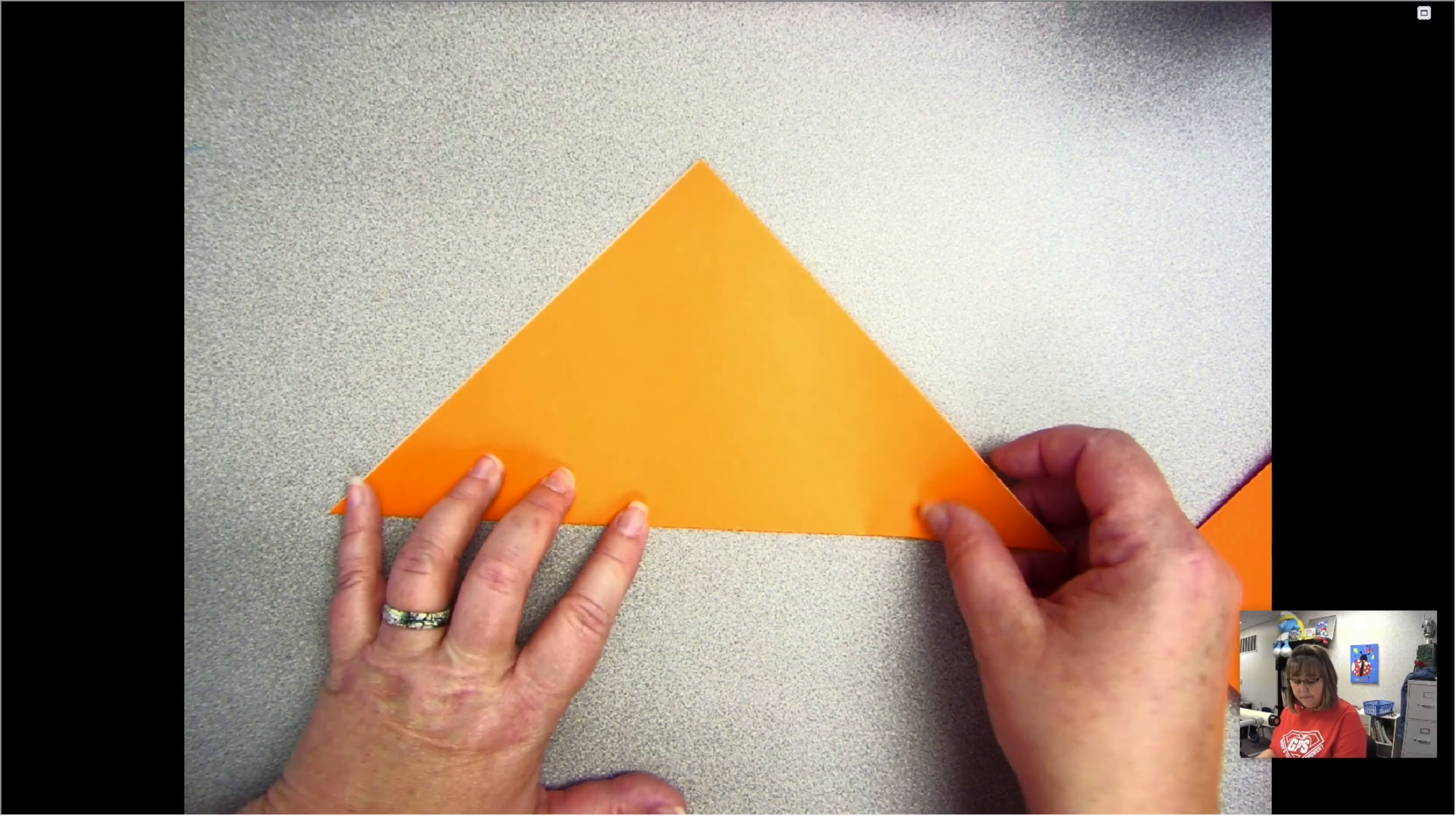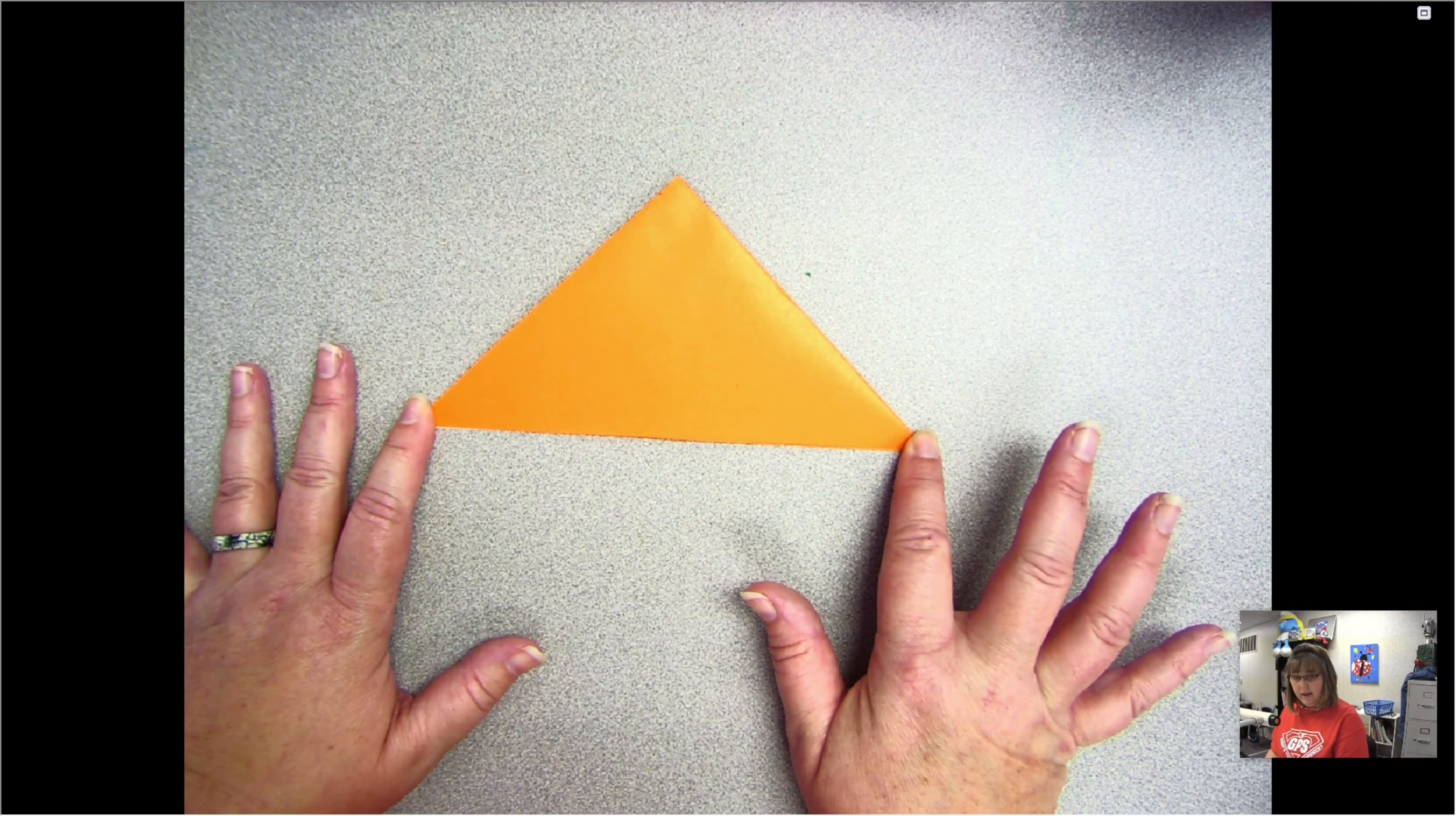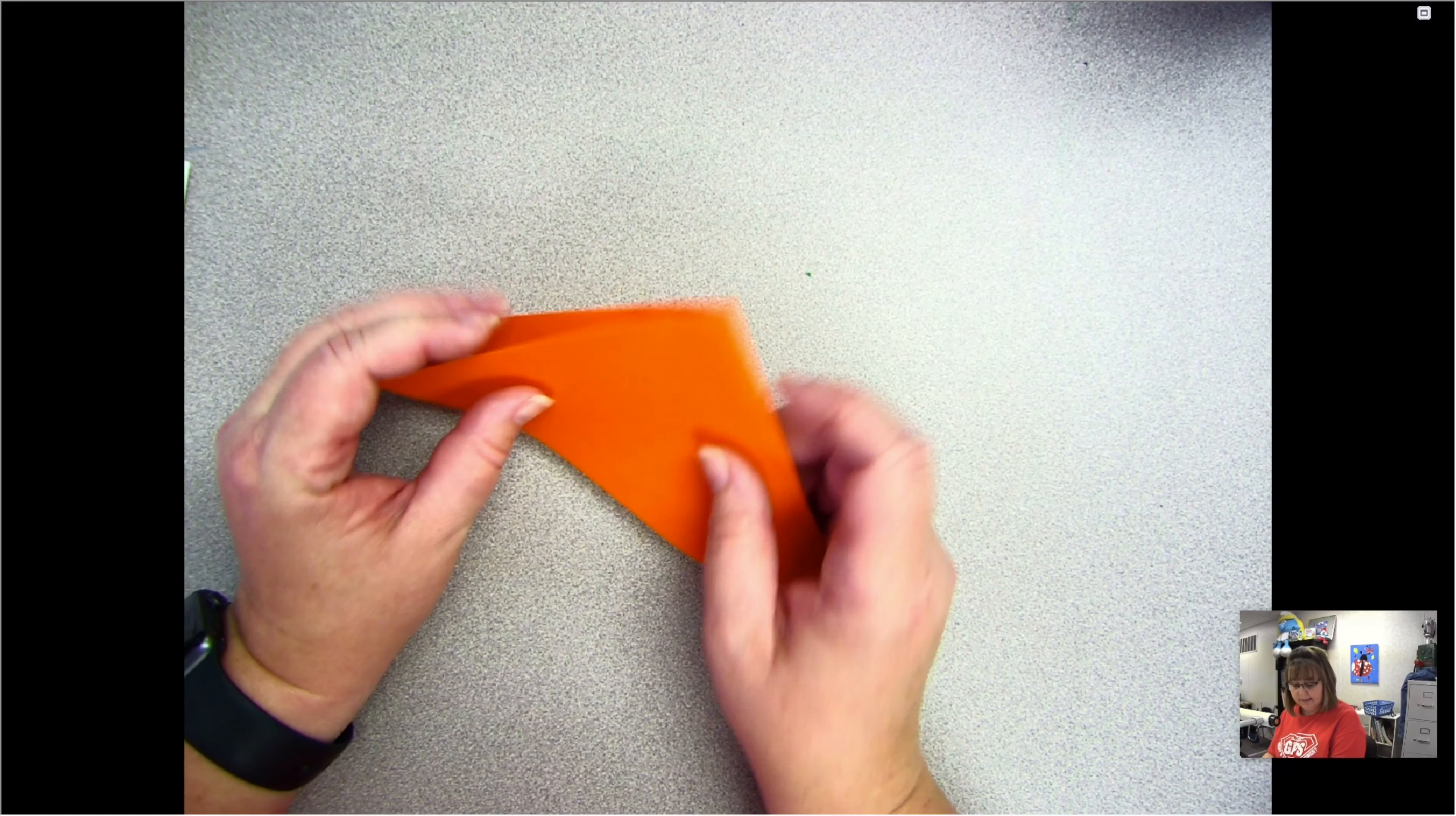Now I've got it, and I'll take this side here and fold it over. I'm back to a triangle now. See how I have my triangle? This side is a fold and this side is open.